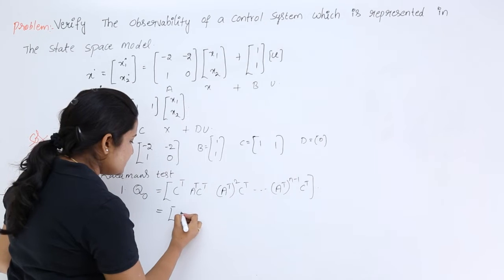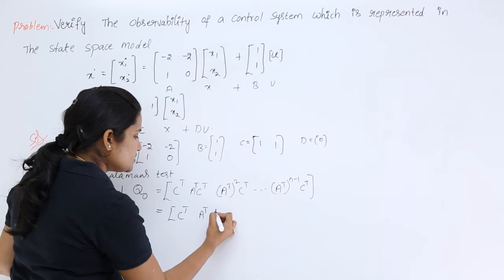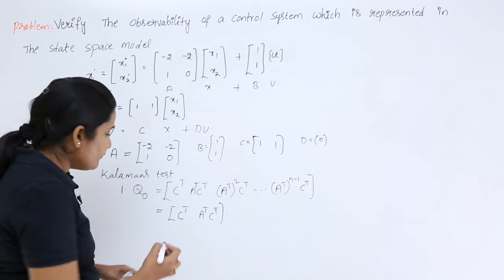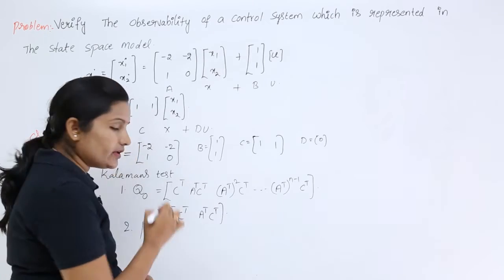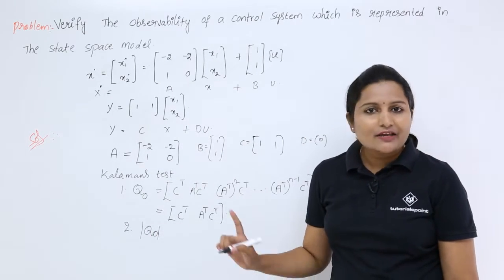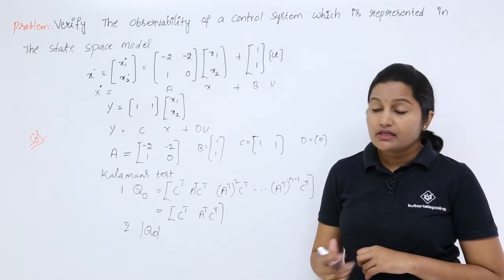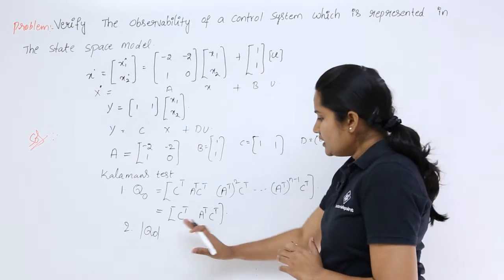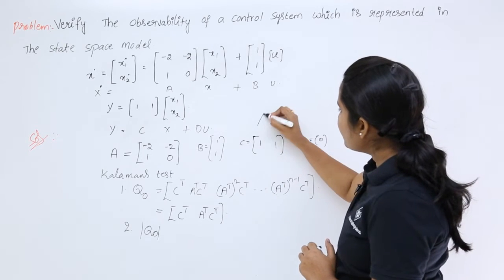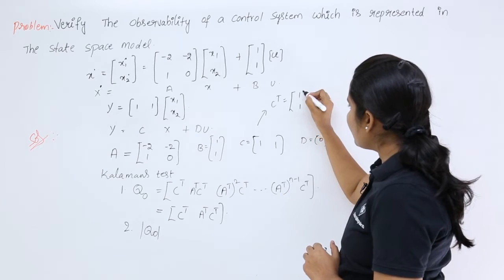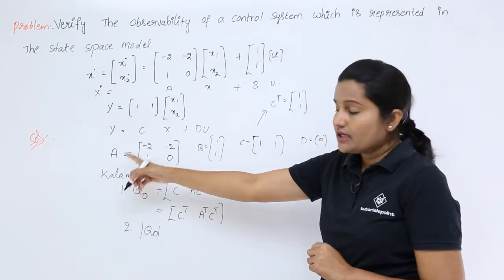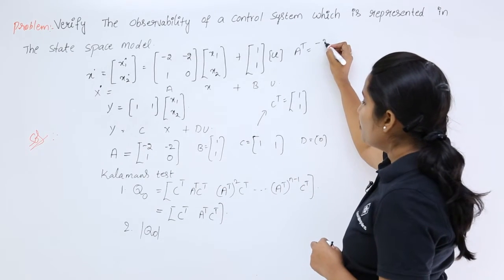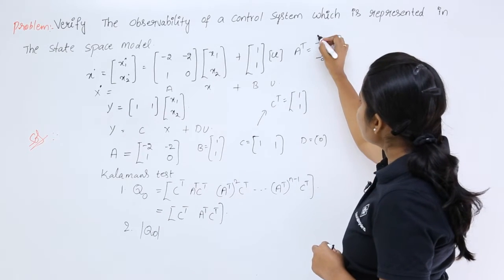First, we find C^T and A^T. The second step will be to take the determinant of the observability matrix: if the determinant is not equal to 0, the system is observable; if it equals 0, the system is not observable. C^T = (1; 1). A^T (A transpose) = (minus 2, 1; minus 2, 0).